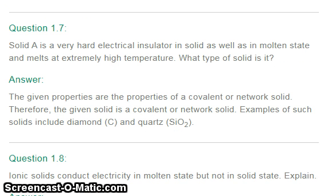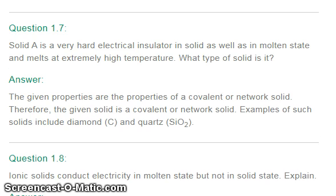The next question: solid A is very hard, an electrical insulator in solid as well as in molten state, and melts at an extremely high temperature. What type of solid is it? The given properties are the properties of a covalent or network solid. Therefore, the given solid is a covalent or network solid. Examples of such solids include diamond and quartz.